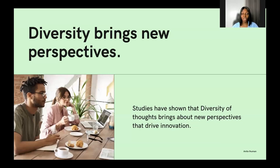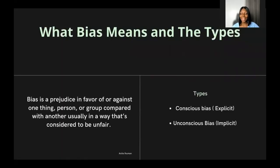Diversity is a commonly discussed topic in our communities. However, we still see situations where minority groups say they are not participating in open source as a result of challenges they face. Why is that? Bias is simply a prejudice in favor of or against a thing or person compared to another in a way that is usually considered unfair. These biases could be held by an individual, a group, or an institution, and can have negative or positive effects — but at the end of the day, someone gets affected.